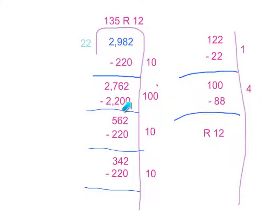Then I ended up with 562. Then I took away ten 22s, which was 220.